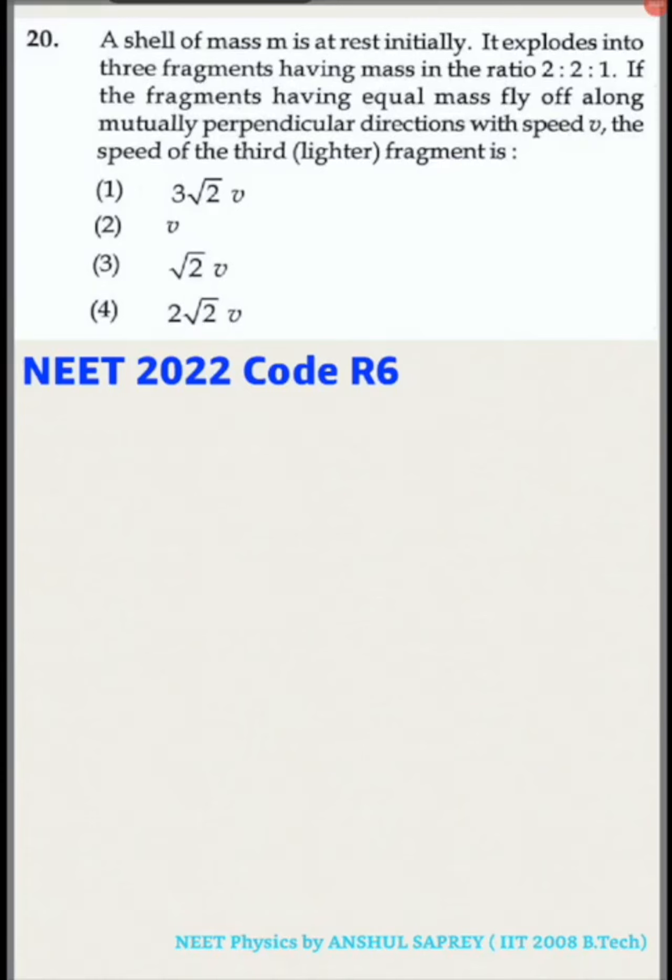The question says a shell of mass m is at rest initially. It explodes into three fragments having mass in the ratio 2:2:1. Let's understand this with the help of a diagram.